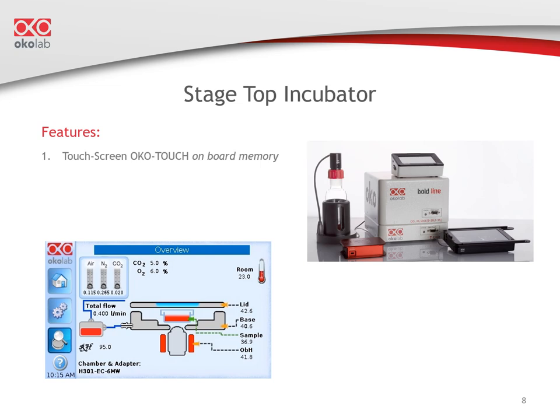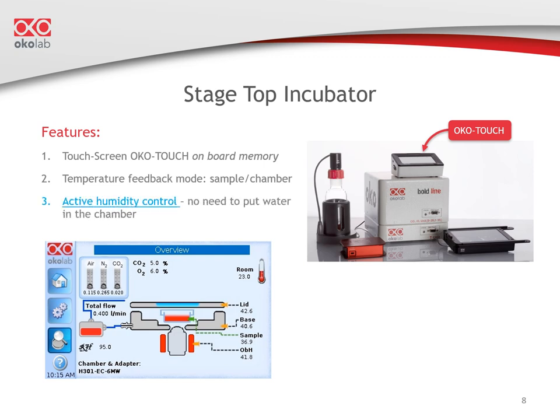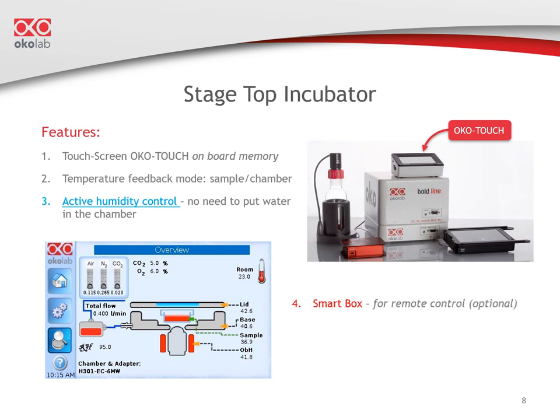OkoTouch is an intuitive touchscreen interface with onboard memory to log data. Temperature can be controlled using sample or chamber feedback mode. Humidity control is active — the humidity module, located away from the stage to avoid accidental spills, is equipped with a humidity sensor, so there's no need to add water into the chamber. The system is compatible with the SmartBox, an optional device for remote data logging and control, and manual gas mixers are also compatible.